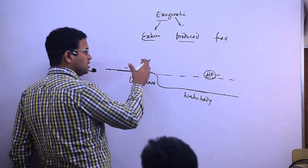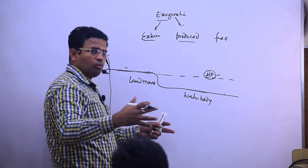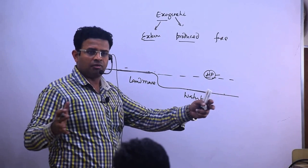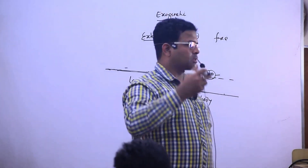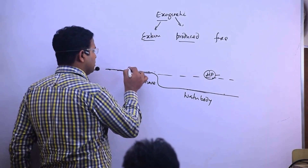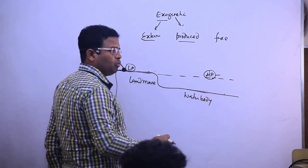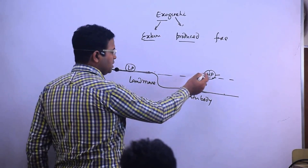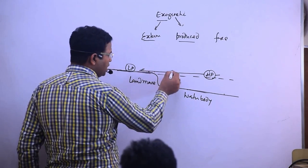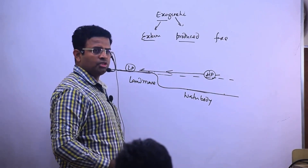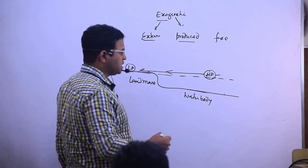Water takes time to get heated and land gets heated fast. So the air over the land will get heated and expand, become lighter, and start moving upward. The air in this region will be less — it will become low pressure. Comparatively, water will be colder, so air will be denser there. Wind starts moving from high pressure to low pressure.